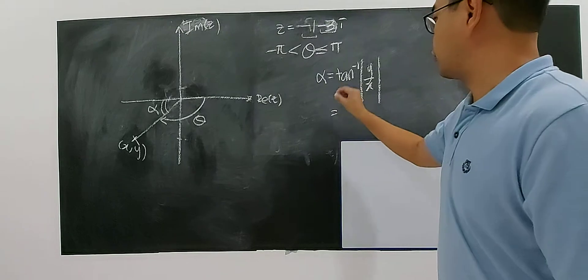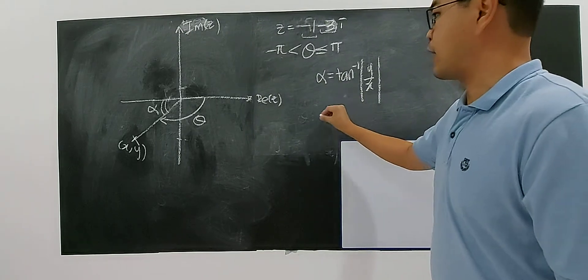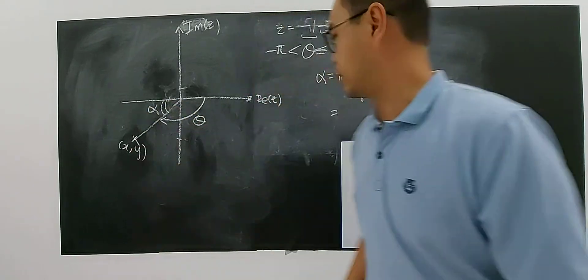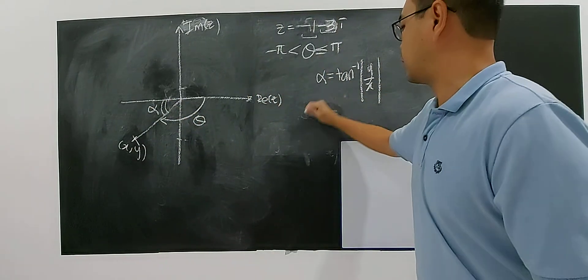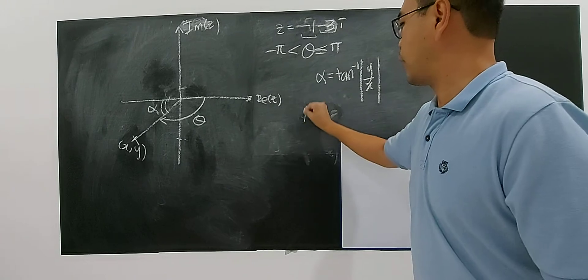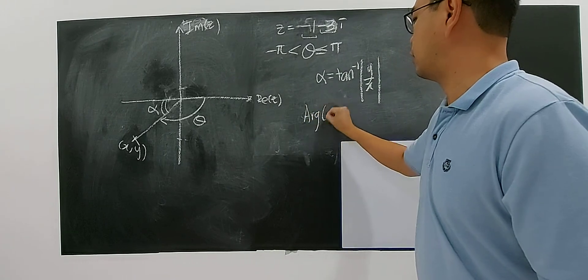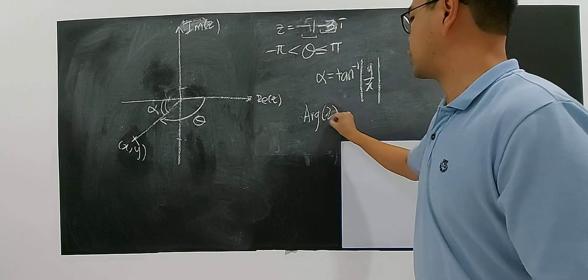You have to find the alpha. After you find the alpha, you get the acute angle. But where's the argument? This will be a tricky part.